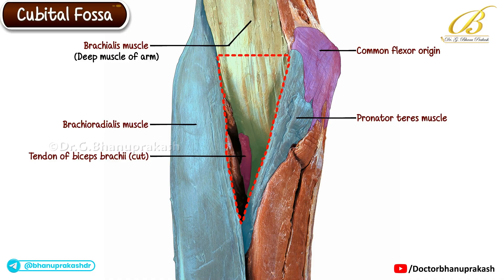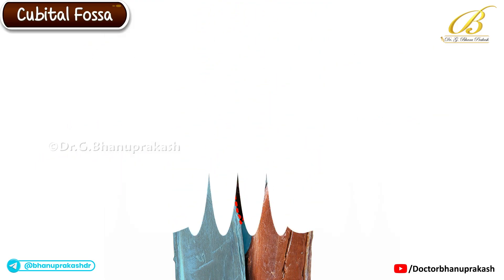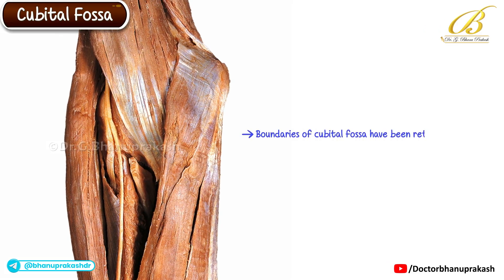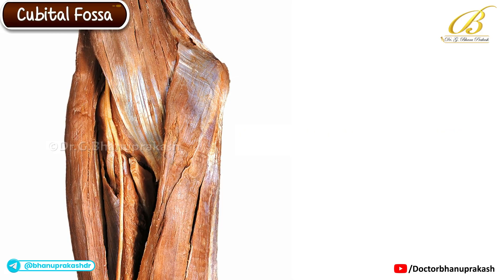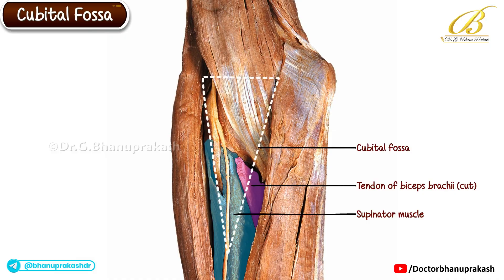Notice how the brachialis fibers converge deeply to insert into the ulnar tuberosity. The proximal limit of the cubital fossa, also called the base of the triangular space, is represented by an imaginary line connecting the medial and lateral epicondyles of the humerus. In this final stage of dissection, the boundaries of the cubital fossa have been retracted to clearly expose the remaining floor muscles. Just beside the cut end of the biceps tendon, we can now see the supinator muscle, which forms the lower part of the floor of the cubital fossa. This muscle is pierced by a branch of the radial nerve — an important landmark to note.